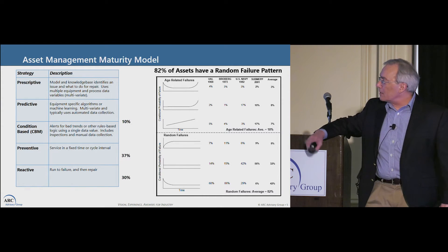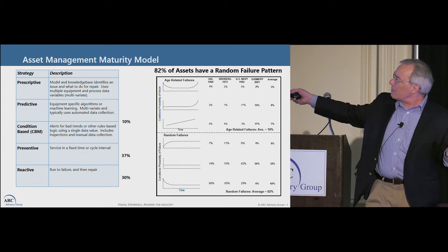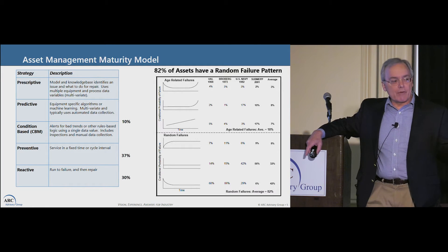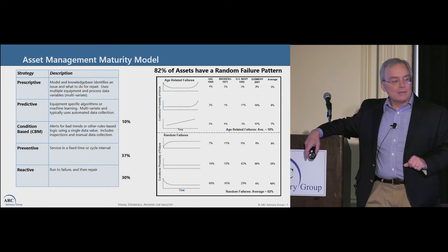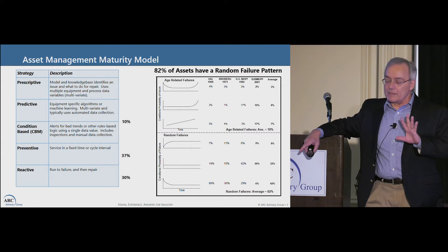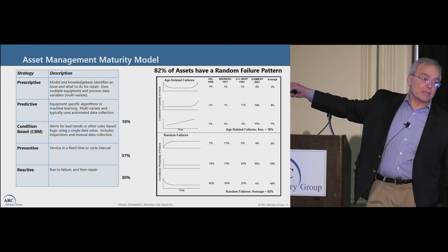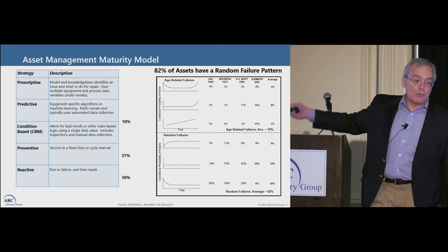The second key point to bring up in this chart is that 82% of assets have a random failure pattern. You're doing preventative maintenance at the point where that curve goes up, but if you have a completely random failure pattern, there is no 'up' on this curve. So preventative maintenance does not apply. There's 82% of your assets where, even if you were to do preventative maintenance, it would be inappropriate.